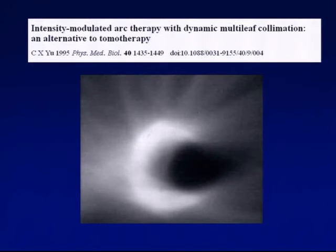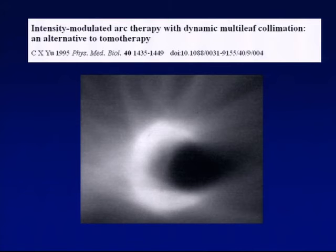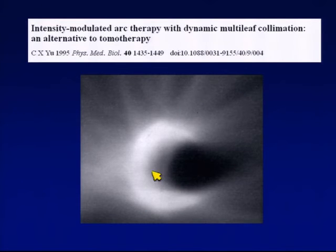A couple of years after Rock published on the concept of tomotherapy, Cedric Yu published a paper entitled Intensity Modulated Arc Therapy with Dynamic Multi-Leaf Collimation, an Alternative to Tomotherapy. The basic message was that you don't necessarily need a new treatment machine or a new binary multi-leaf collimator — you can deliver rotational IMRT on a conventional linear accelerator with a conventional multi-leaf collimator. This is a film from that paper, and back in 1995, to be able to deliver a C-shaped dose distribution with sparing of the sensitive structure in the concavity of the C was actually quite impressive.